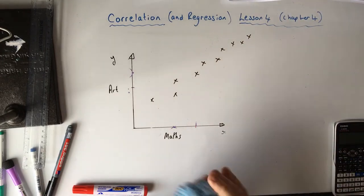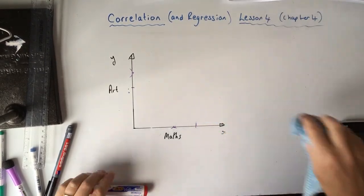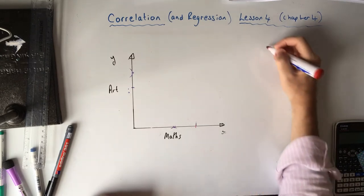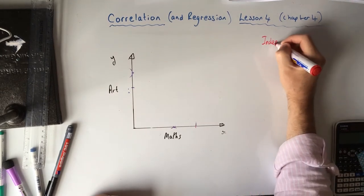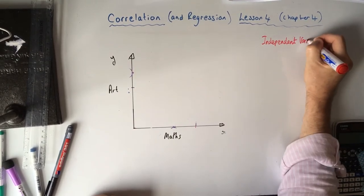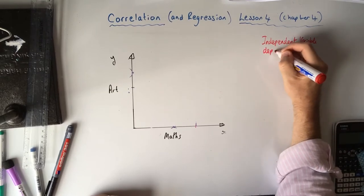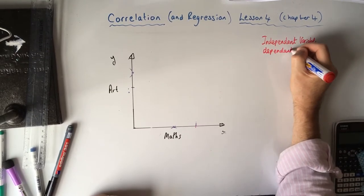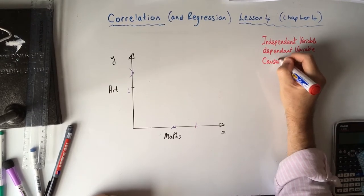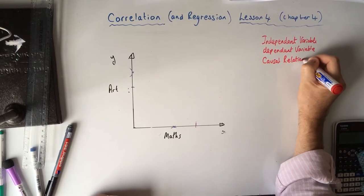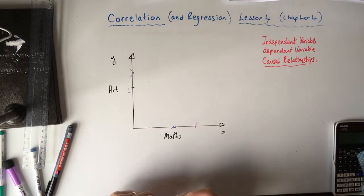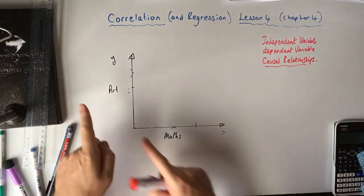So the first thing to beware of is causality — what causes the causal relationship. Think of those words: independent variable and dependent variable. Also, causal relationships are not always present just because there's correlation — the maths and art example shows us that.